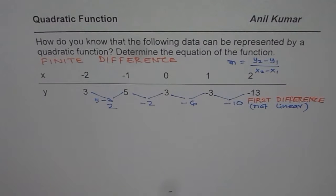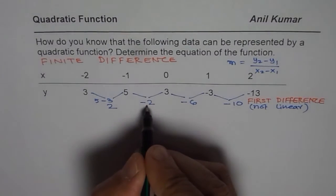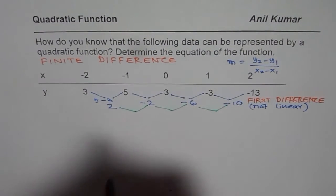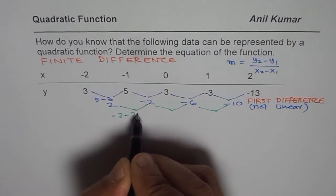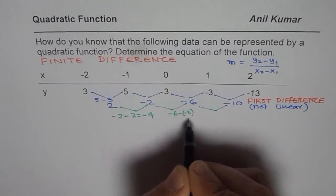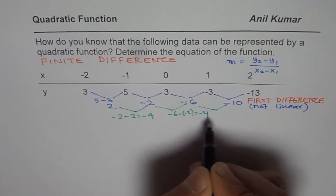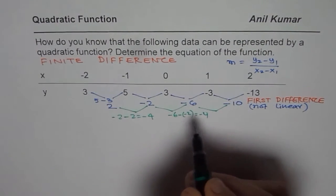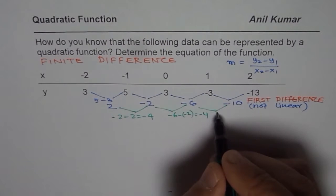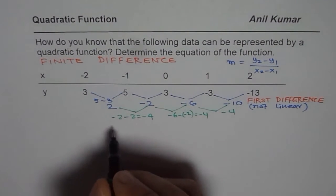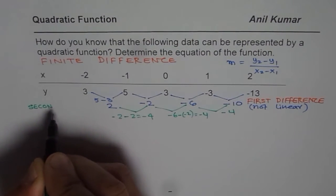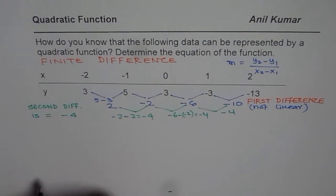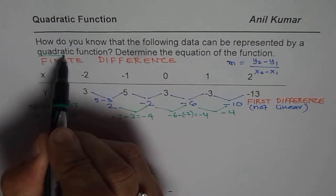Now let us find the second difference. To find the second difference, we repeat the process. We do minus 2 take away 2, minus 6 take away minus 2, and minus 10 take away minus 6. Minus 2 take away 2 gives minus 4. Minus 6 take away minus 2 again gives minus 4. Minus 10 take away minus 6 is again minus 4. So the second difference is constant, equal to minus 4. Since the second difference is constant, we know the equation represents a quadratic function.